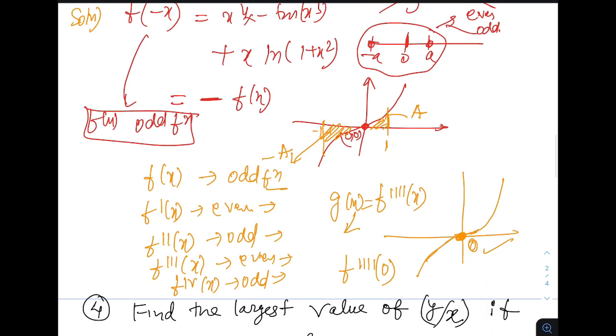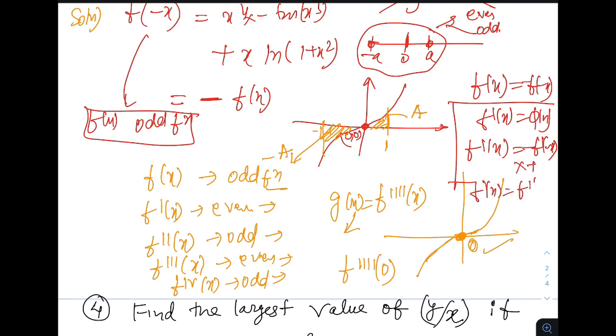The quick proof of this will be derivative of odd is even and vice versa. So let's say f dash x is some function phi of x. Since f of x is odd so f of minus x equals minus f of x. If I will differentiate we will get f dash of x equals minus f dash of minus x times minus 1. This will give f dash x equals f dash minus x. Hence phi x equals phi of minus x. So the derivative of the odd function is even and vice versa. Think about its integration.